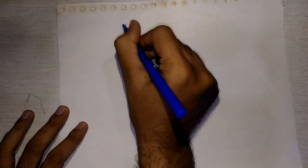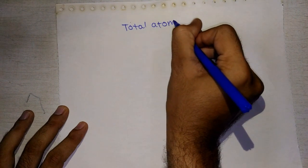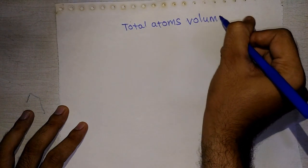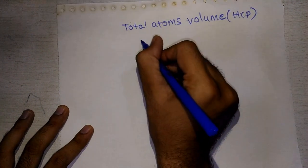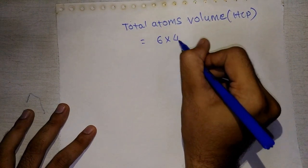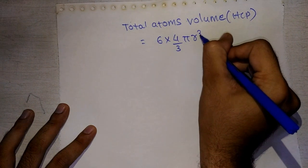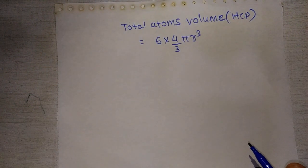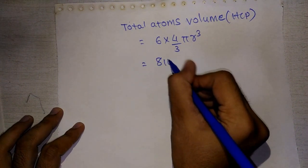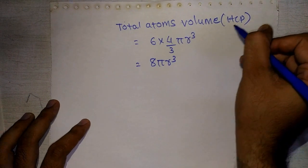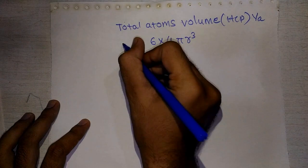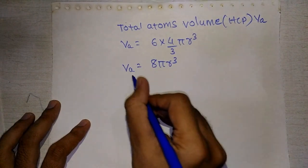Using this, we can write the total atom volume Va for the HCP unit cell. That will be 6 × (4/3)πr³, which gives us Va = 8πr³.